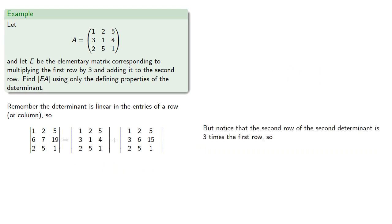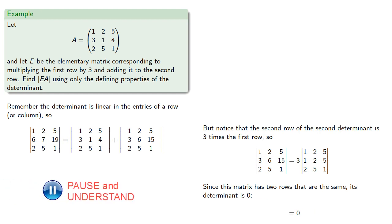So let's consider this second determinant. Notice that the second row of the second determinant is three times the first row. And if you multiply one row of a matrix by a constant, you can factor out that constant. And so the determinant of the second matrix is three times the determinant with the three factored out. And since this matrix has two rows that are the same, its determinant is zero. So over on the left, we have the determinant of EA. Over on the right, we have the determinant of A plus zero, or just the determinant of A.